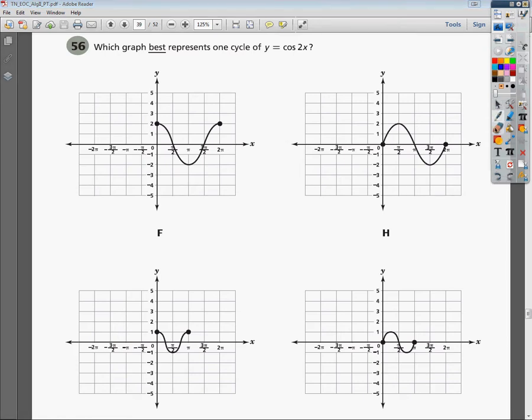There's a couple things going on here. First off, you have to know what the cosine function looks like. If it goes up and down like this, kind of like a snake, that's your sine function. So you don't want that. Anything that looks like that, you can just go ahead and eliminate. So that's out, and this is out as well.